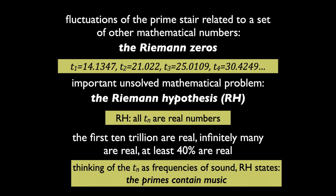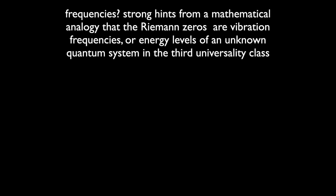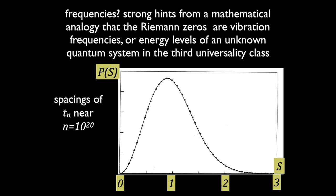Think of these numbers as frequencies. If they're real, they're definite frequencies; if they're complex, they're slightly blurred out. Think of any sequence with well-defined frequencies — call it music. So the Riemann hypothesis says the primes contain music. There are strong hints from a mathematical analogy that the Riemann zeros are vibration frequencies or energy levels of some unknown quantum system in the third universality class. The spacings of these numbers near 10 to the 20th beautifully fit random matrix theory — quantum chaos theory. But it goes wrong beyond the first few neighbors, where random matrix theory fails.